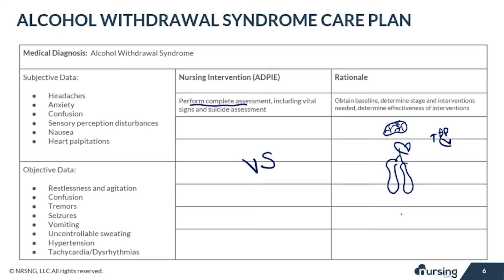Include any withdrawal questions your organization uses per protocol — we'll talk about the CIWA later. This will help you obtain a baseline and determine the stage and severity. Reassessing often, usually every three hours, will help determine the effectiveness of interventions. There are different stages: stage one includes hyperactivity; stage two includes hallucinations and seizure activity; stage three includes DTs, confusion, fever, and anxiety — think of this as mild, moderate, and severe.